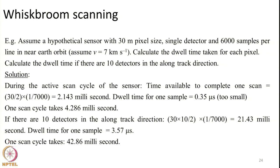Consider a hypothetical sensor with 30-meter pixel size, a single detector (essentially a line scanner), 6000 samples per line, in near-polar orbit with v = 7 km/s. We want to calculate the dwell time per pixel for a line scanner.